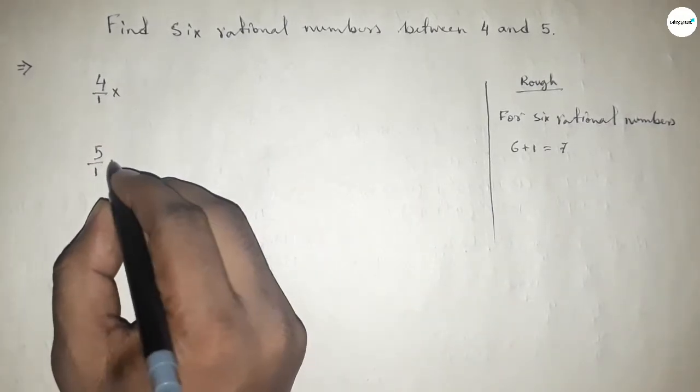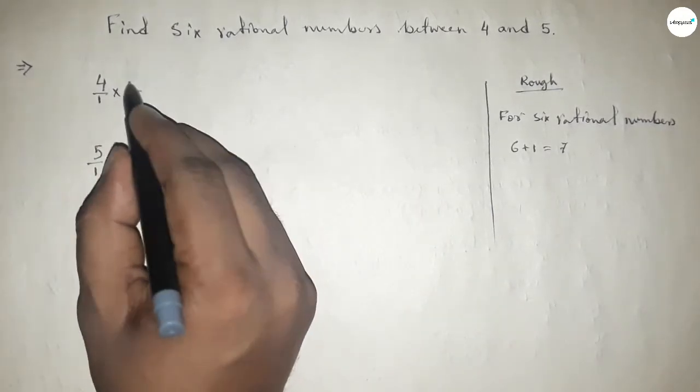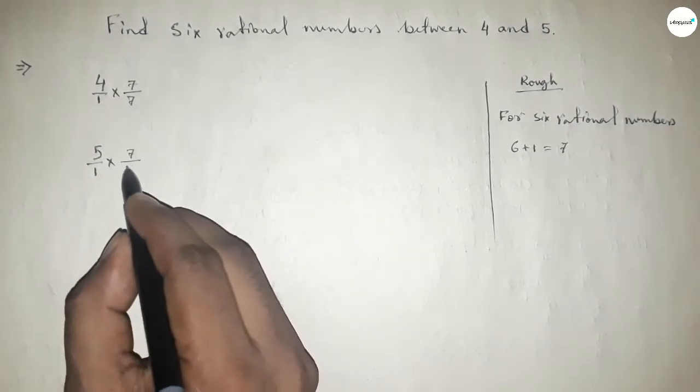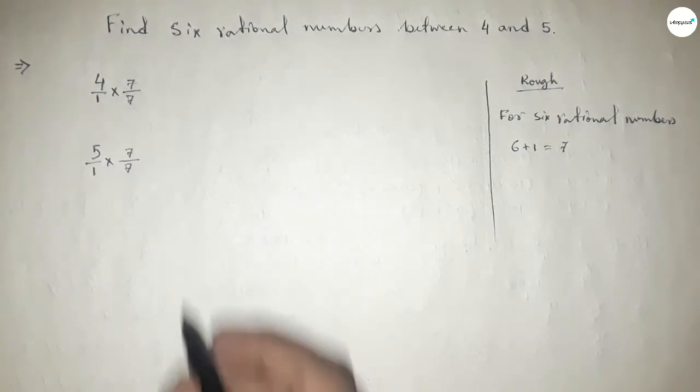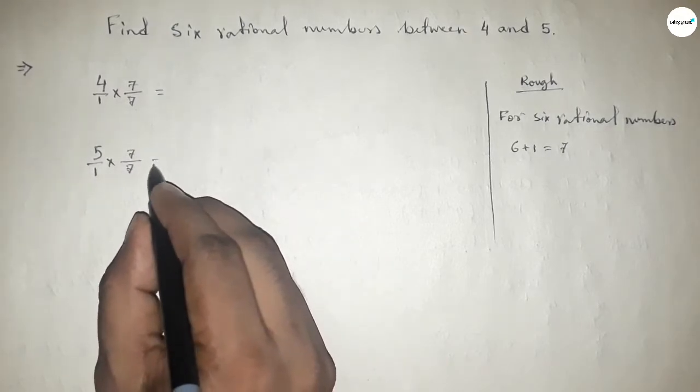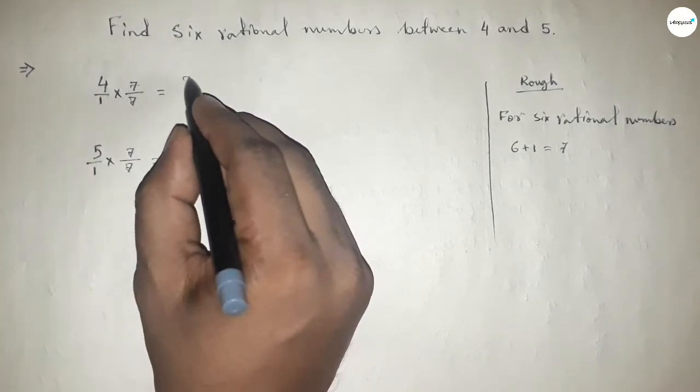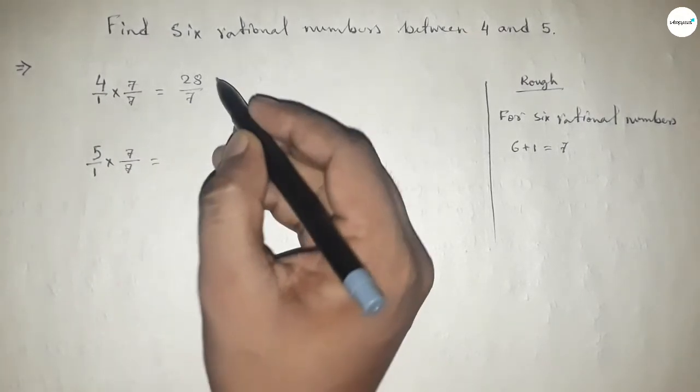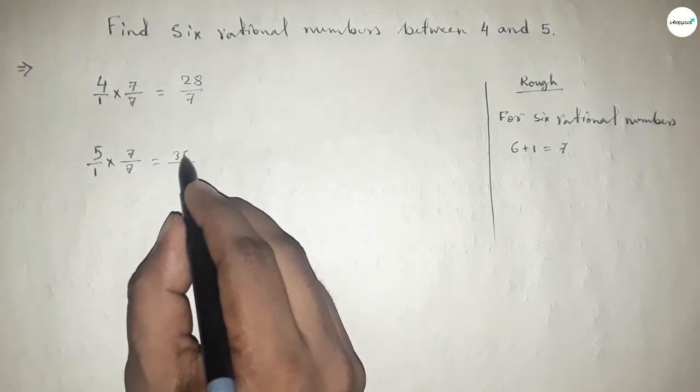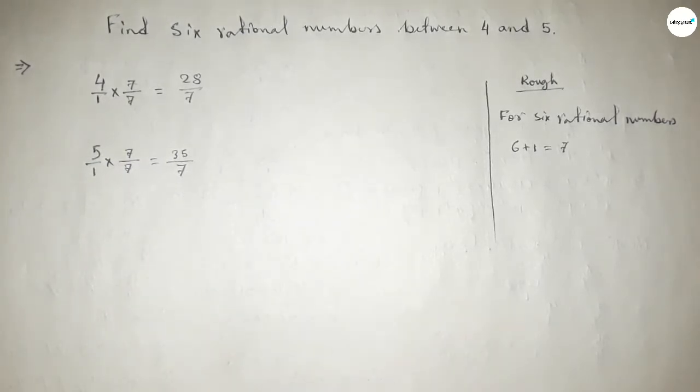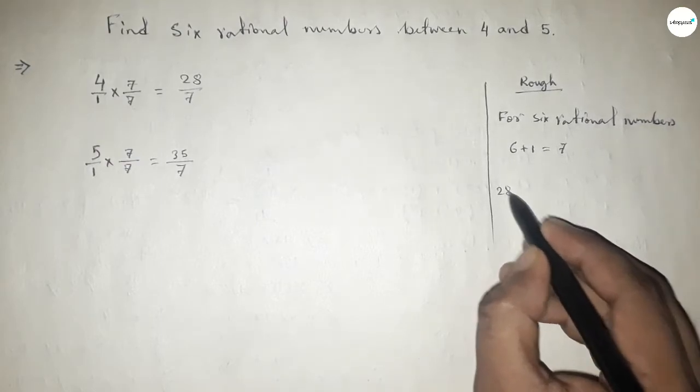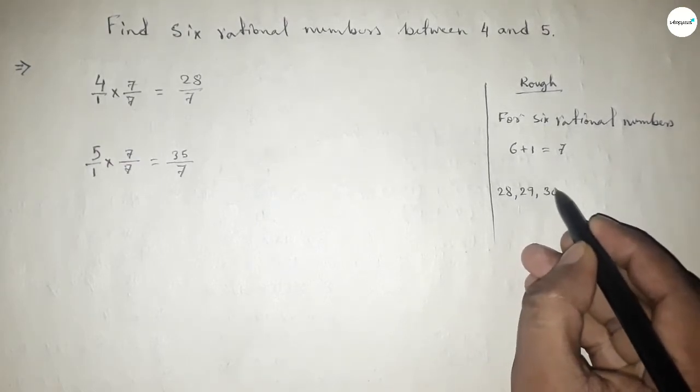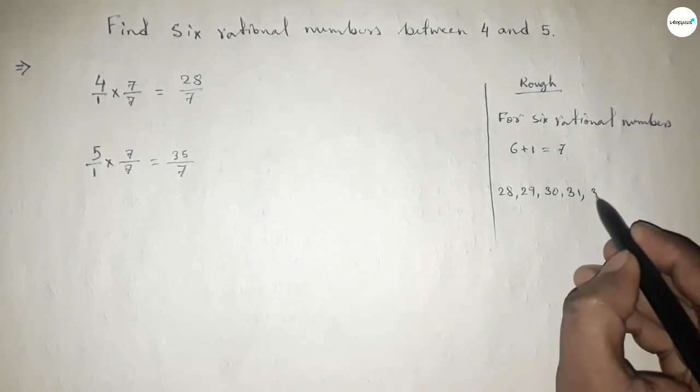So here 7/7 and here also 7/7. Okay, so this is 28/7 and this is 35/7. Now between 28 to 35 we can find six natural numbers.